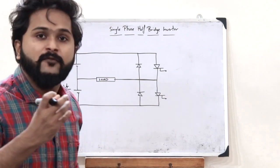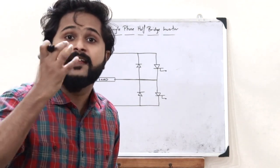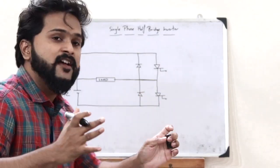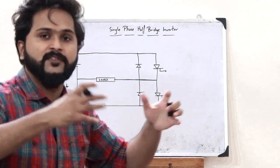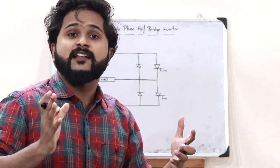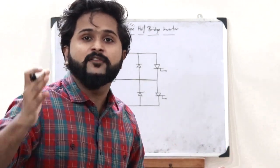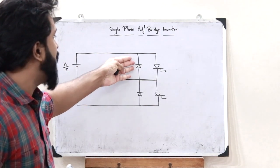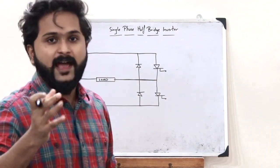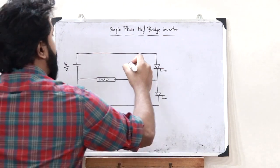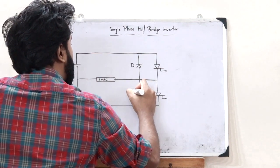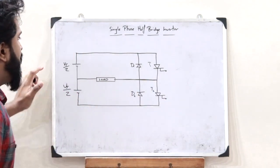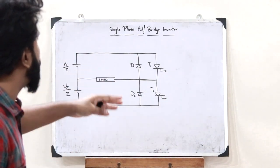These two diodes are provided for the purpose of conducting damping current. Damping current is the current that gets discharged when the capacitors and inductors inside this particular load start discharging. When it discharges, it has to have some kind of a path through which the electricity can flow — that is why we provide these two diodes. So let this be D1, this be D2, and let this be T1 and this be T2. Now let us see the working of this particular circuit.